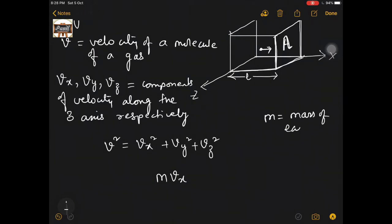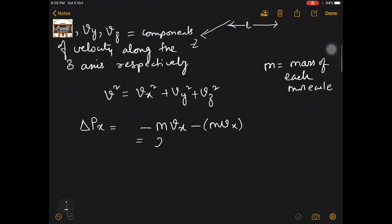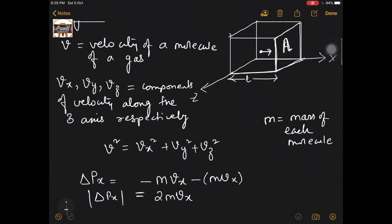When it hits and then rebounds again, the momentum is m·Vx but with a negative sign. So the change in momentum along the x-axis is going to be -m·Vx minus m·Vx. If you consider only the magnitude of momentum imparted, it is 2m·Vx.